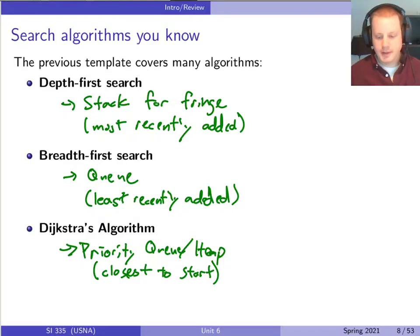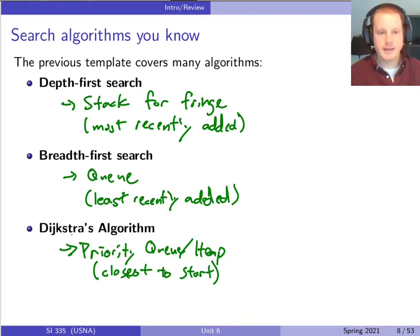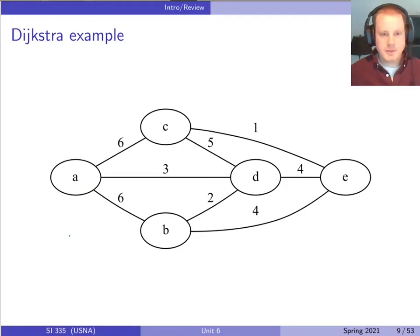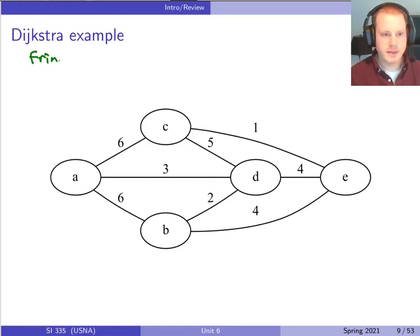Shortest path searching. You've already learned about this with Dijkstra's algorithm in a previous class, but we're going to review what Dijkstra's algorithm is about, how it works, and then get into a new problem called all pairs shortest path. It's related to this one but takes it to the next level. I'm going to go through this quickly because it should be reviewed from previous classes, like from data structures.